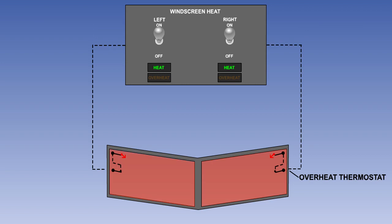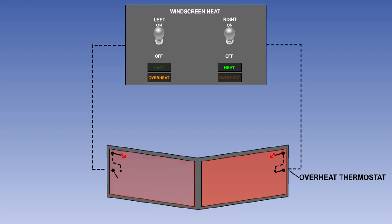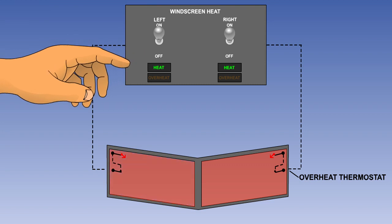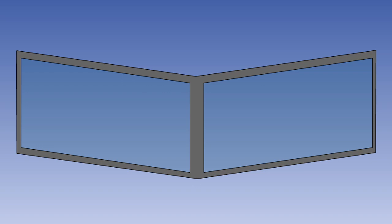Both systems also have a thermostat in the windscreen for overheat protection. If the normal system fails to control the windscreen temperature, the overheat thermostat will cut off the power and put on a warning light. On some systems, the system will operate in the overheat mode, with the overheat thermostat controlling the temperature and the warning light cycling on and off. On others, once the overheat thermostat opens, the warning light is locked on and heat can only be reapplied by cycling the control switch to off and then back to on. If the windscreen should overheat, it may suffer permanent damage to the vinyl interlayer, which will manifest itself as vinyl bubbling and discolouration.